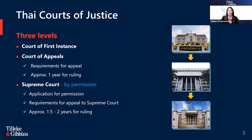Thai law traditionally allows parties to appeal any Court of First Instance decision to the Appeal Court. Appeal proceedings may be made on points of fact or law. Obtaining an appeal decision may take approximately one year. The Supreme Court has the authority to grant permission to file a case when it views that the issue is important and worthy of a decision. Proceedings in the Supreme Court may last from one and a half to two years approximately, or longer depending on court backlog.